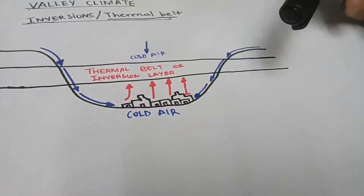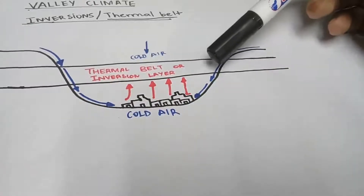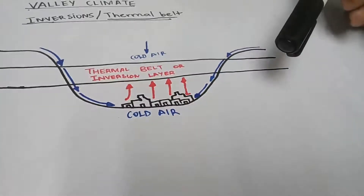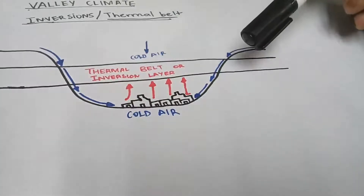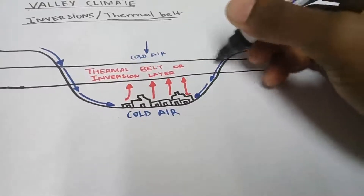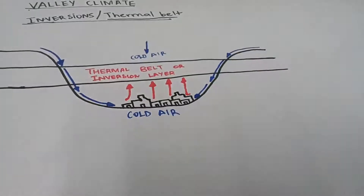People who want some warm temperatures living in the valleys, in rural areas and so on, will tend to develop or construct their buildings up the slope in the thermal belt or invasion layer. People will tend to build their houses there, around the thermal belt area.